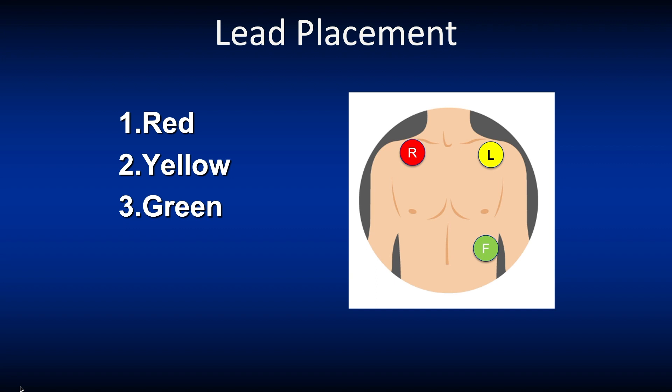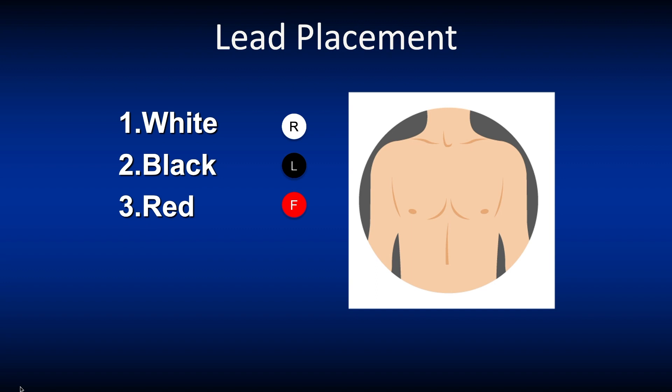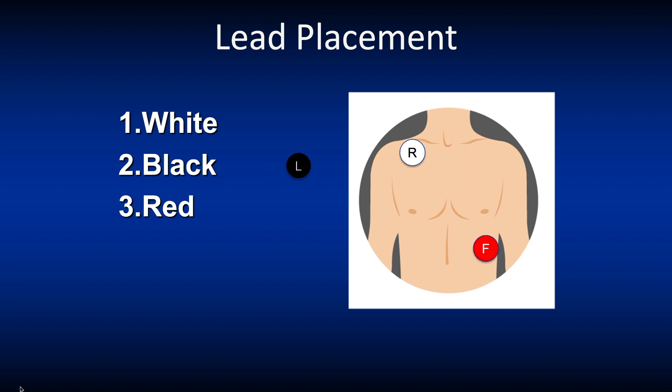I remember the colors by thinking of a traffic light or traffic signal. In systems around the world based on the American education system, you will find the following configuration: white to right, red to ribs, and what's left to left. So be familiar with the equipment available in your organization.